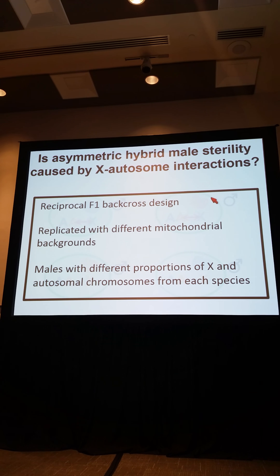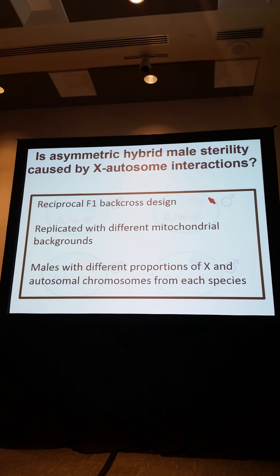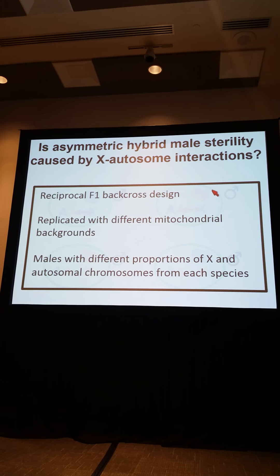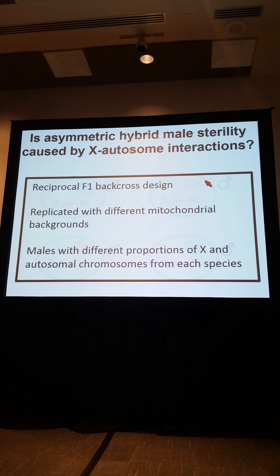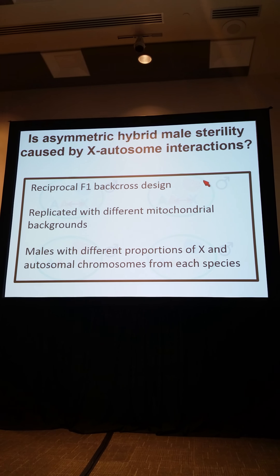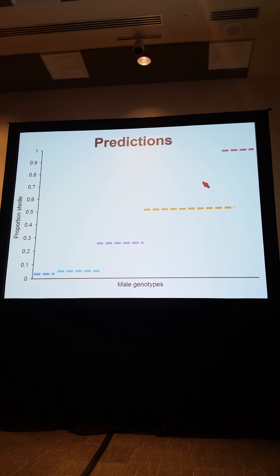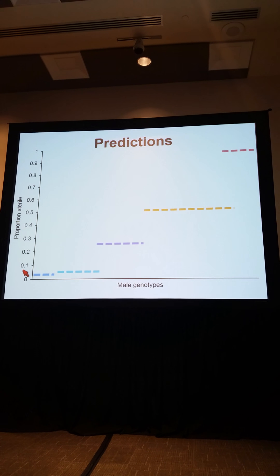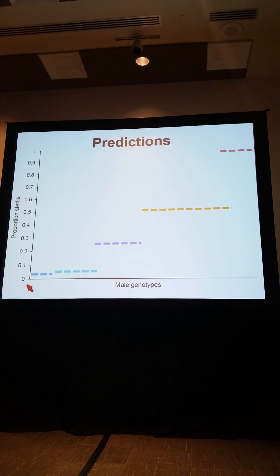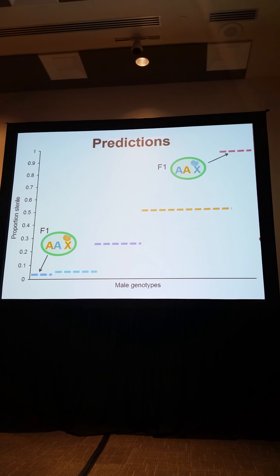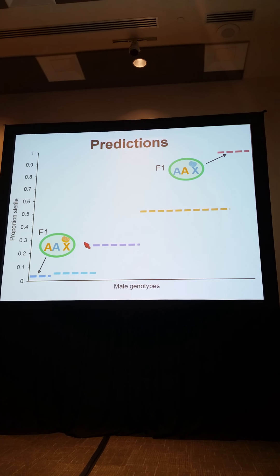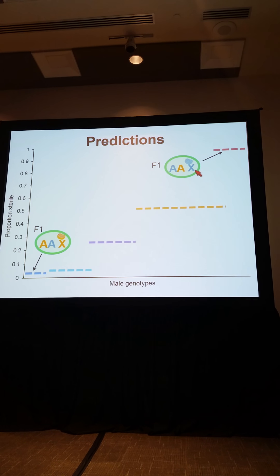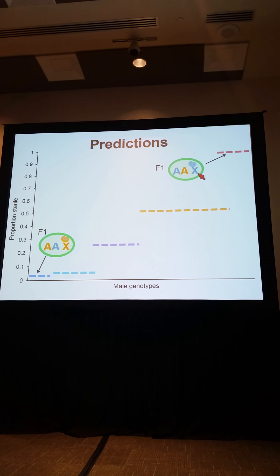To test this directly, I used a reciprocal backcross design replicated with different autosomal backgrounds. Essentially, I created males with different proportions of X and autosomal genome from each species, and we can predict the proportion of males that should be sterile or fertile depending on their genotype. For F1 males with the latens X chromosome, we expect almost all to be fertile. For F1 males with the remanei X chromosome, we expect 95% sterility.